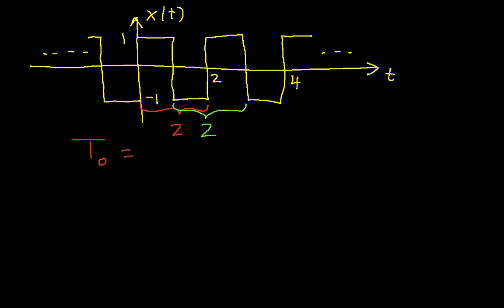So our t₀ will be equal to 2. We also at some point will need to know ω₀, which is equal to 2π over t₀. So in this case, ω₀ is equal to π.